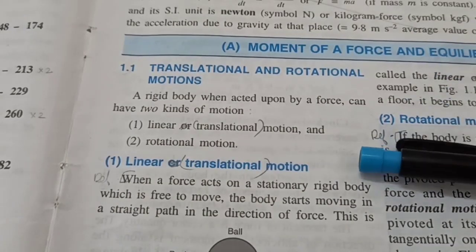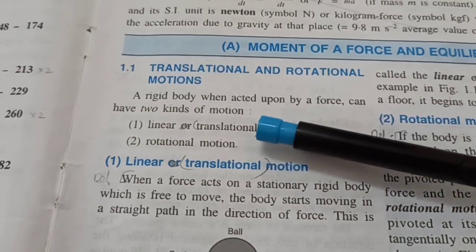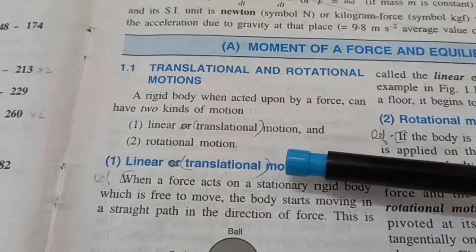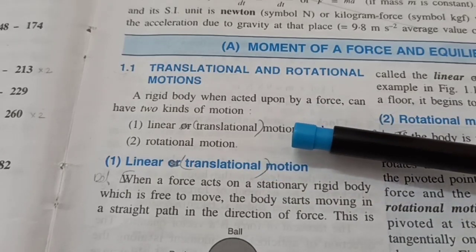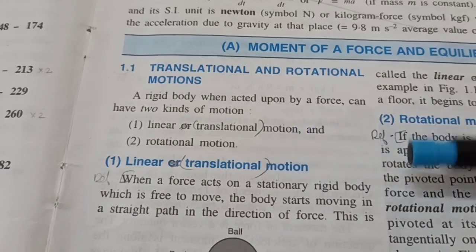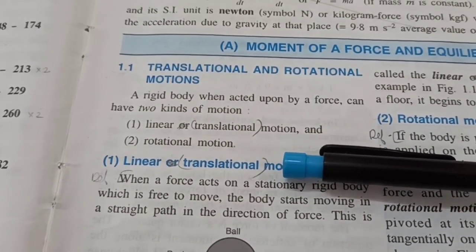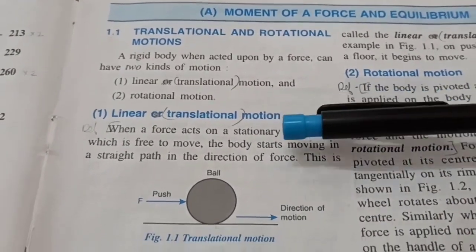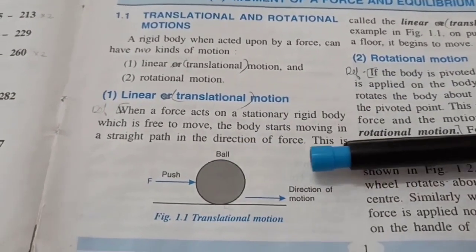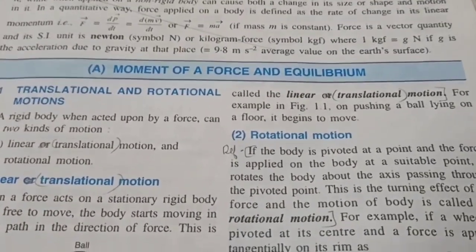Translational motion is the type of motion in which all the particles of the body cover an equal distance, whereas in rotational motion they don't. Translational motion is of two types: rectilinear and curvilinear. Rectilinear motion is a type of translational motion in which the object travels in a straight line.